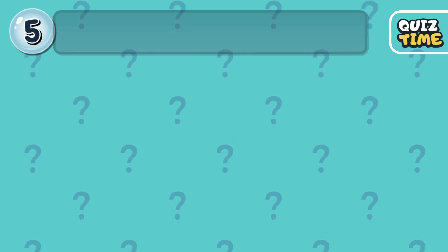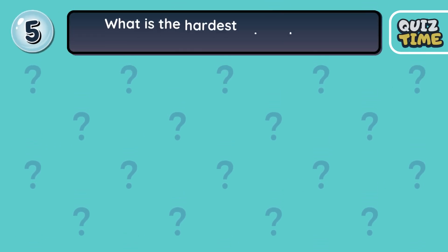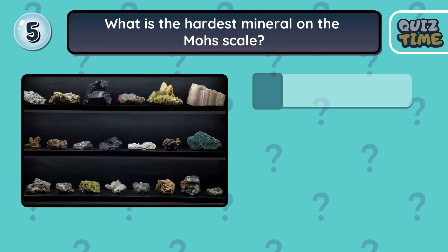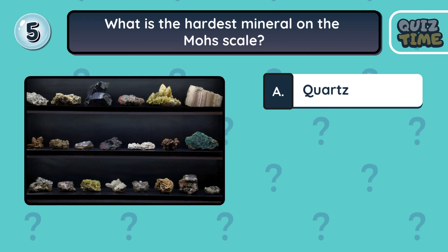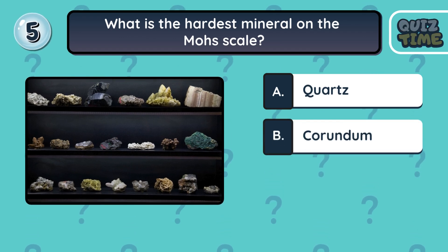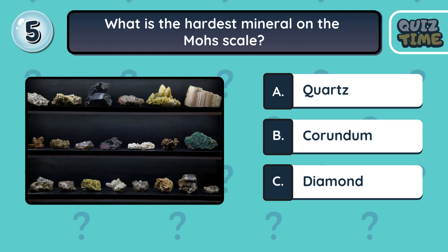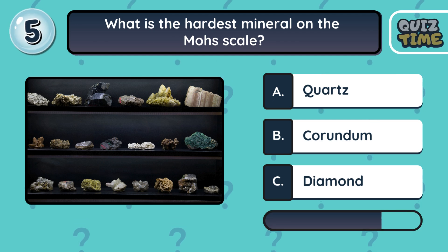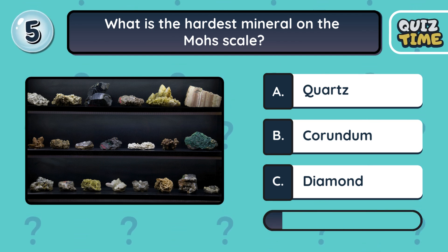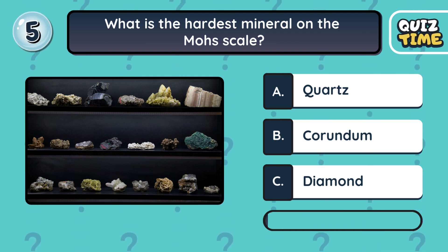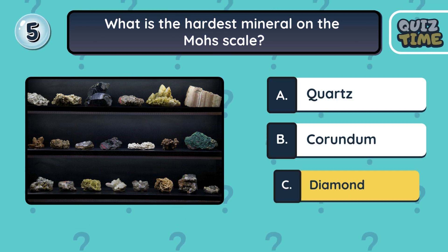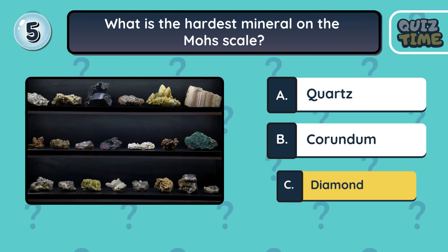Number 5. What is the hardest mineral on the Mohs scale? A. Quartz. B. Corundum. C. Diamond. The correct answer is C. Diamond.